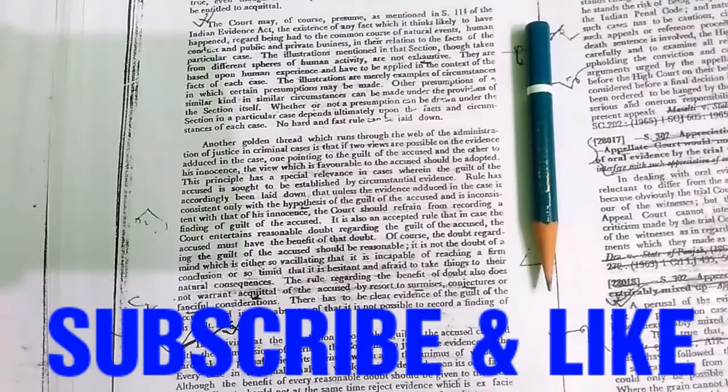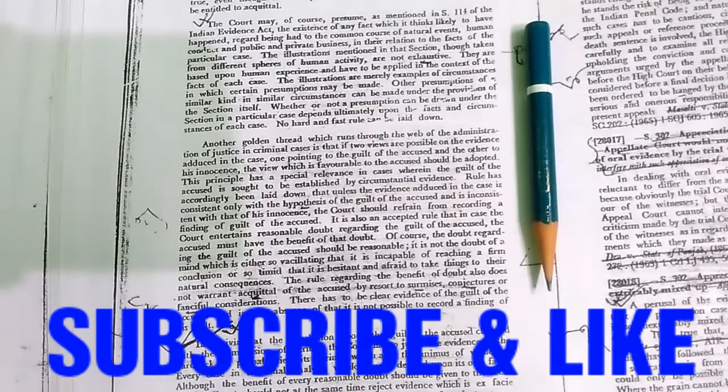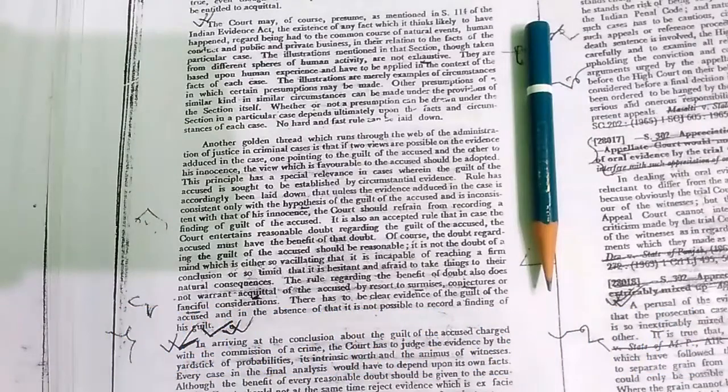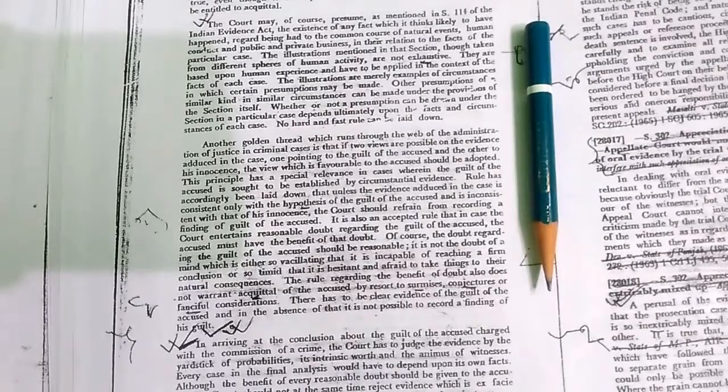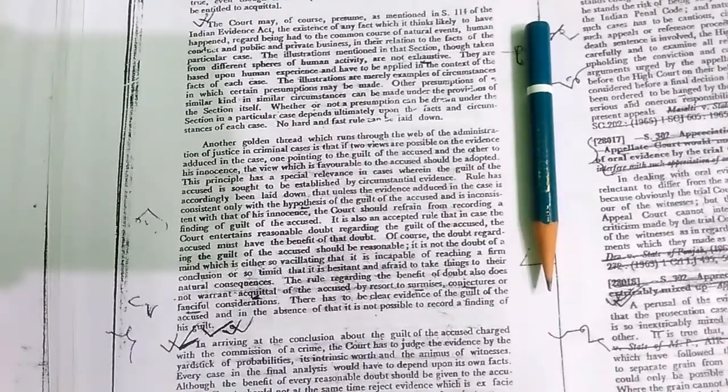This principle has a special relevance in cases wherein the guilt of the accused is sought to be established by circumstantial evidence. The rule has accordingly been laid down that unless the evidence adduced in the case is consistent only with the hypothesis of the guilt of the accused and is inconsistent with that of his innocence, the court should refrain from recording a finding of guilt of the accused.